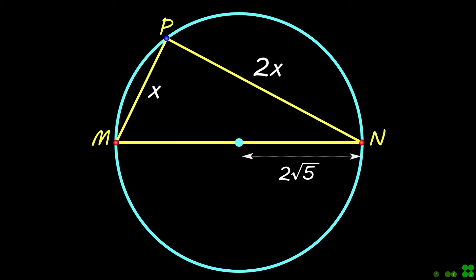The diameter of the circle is twice the radius. So the side MN is 4 times square root of 5.